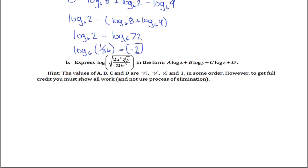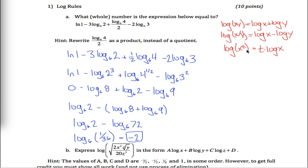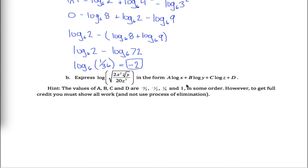Next problem: express this log in the form — something times log x plus something times log y plus something times log z plus something. The first thing to recognize is this is the log of something raised to the one-half power; we're taking the square root of this entire thing. That one-half power can be brought down in front by the third log rule, so we can rewrite this as one-half times the log of everything else.